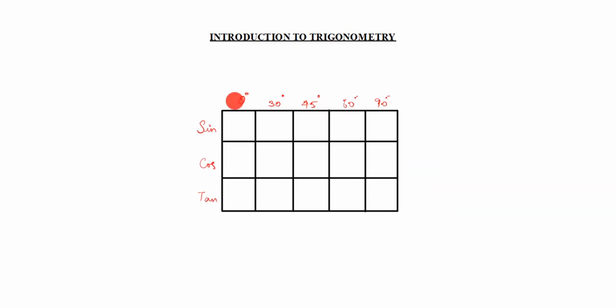We will see the trigonometry ratios for 0°, 30°, 45°, 60°, and 90° using a tricky method. First, for sin, we take fractions: 0/4, 1/4, 2/4, 3/4, 4/4, and take the square root of each.